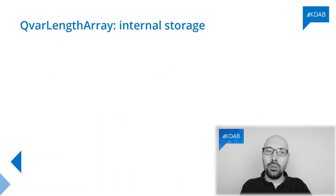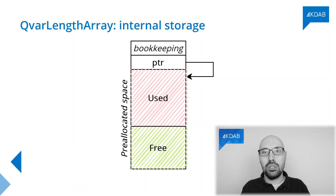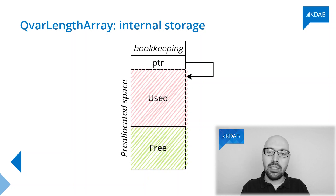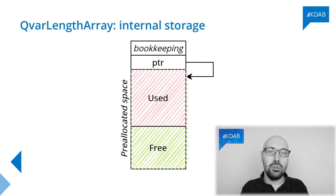To show you how QVarLengthArray works in a nutshell, a QVarLengthArray object looks something like this. There is some bookkeeping inside, and there is a pointer, and this pointer points either to some internal pre-allocated space or to some external space allocated on the heap. As long as the used space fits inside that pre-allocated space area, the pointer pretty much points to itself — points to the object itself — and you can use that space until there is free capacity.